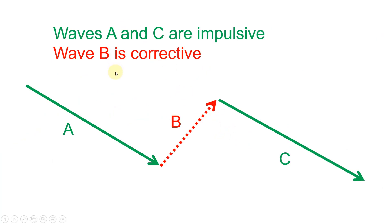So you have first of all the impulsive pattern, which is the five-part wave structure I just showed you. In the Elliott Wave method, the second main pattern you get is a three-part corrective wave pattern. In a corrective wave pattern you've got three waves: an A wave, a B wave, and a C wave.